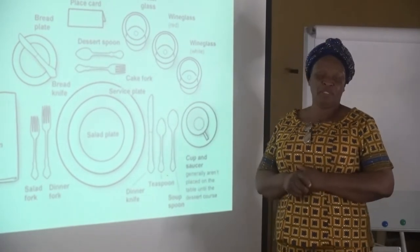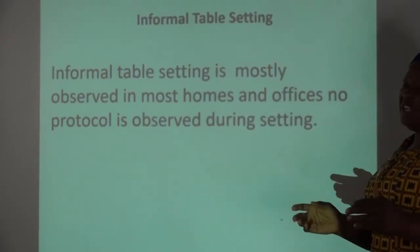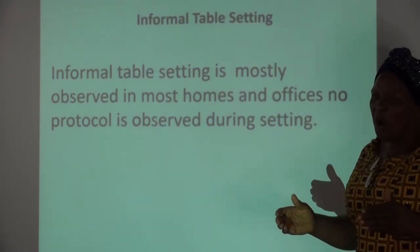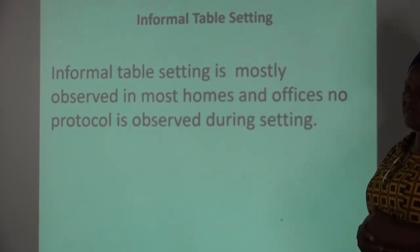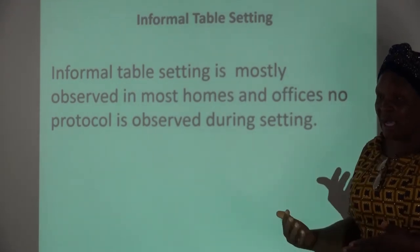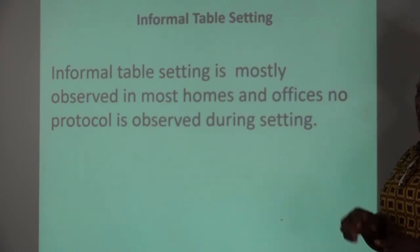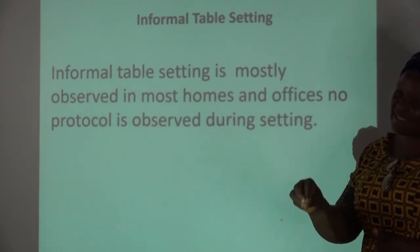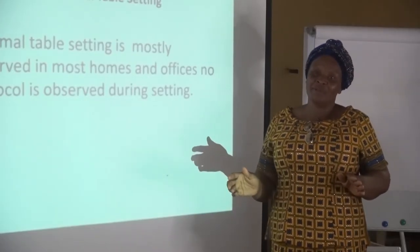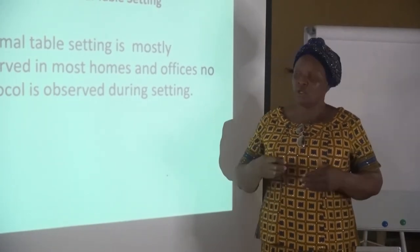Then we go to informal table setting. In informal table setting, these are settings at home. In the home, there are not many protocols. You do not need the services of a waiter or a waitress, because dinner can be served at the table without the major cutlery set being laid out. Only the major cutleries are set there. In most homes, we do not have waiters and waitresses — only in standard hotels.